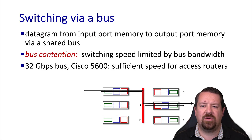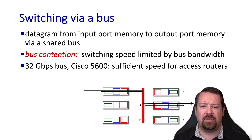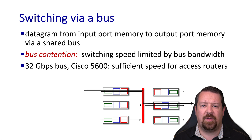An alternative to this is to do switching via a bus, where the packets are not copied to an intermediate memory, but forwarded directly across from input to output. To do this successfully, the bus must run very fast, as we mentioned ideally n times the line rate of each of the input ports. As an example, a Cisco 5600 series router uses a 32 gigabit per second bus. The high-speed components of the bus can be quite expensive, as well as using significant amounts of power and generating significant amounts of heat. Because the bus is a shared architecture, only one packet may be traversing the bus at any given time, and this is why the bus must run so fast to keep up with the input ports.